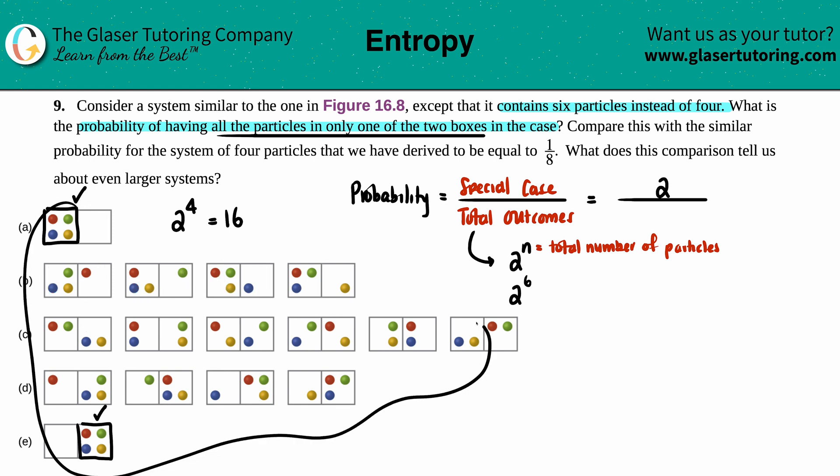But since we have 2 to the 6—we have six particles—we need to find out what's the total number of possibilities. 2 raised to the 6 is 64. That kind of makes sense: more particles, more possibilities.